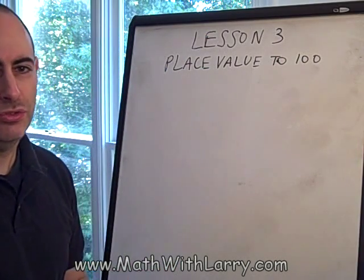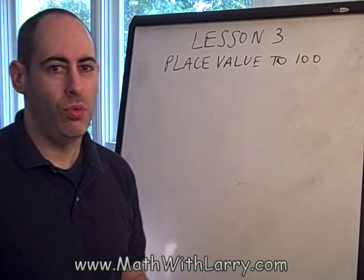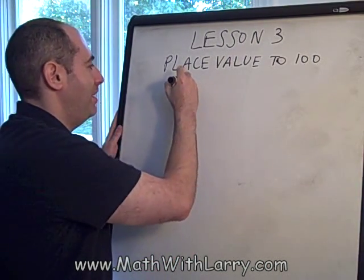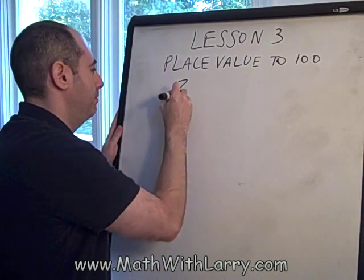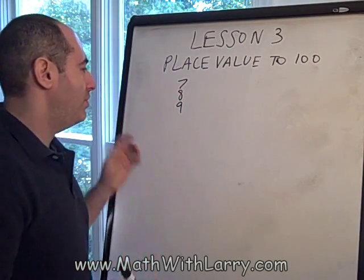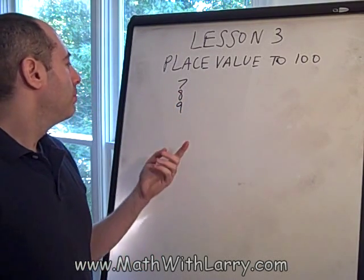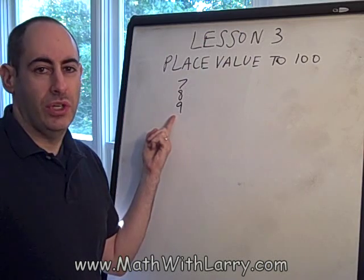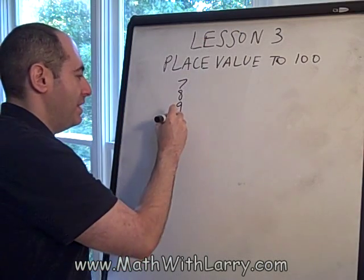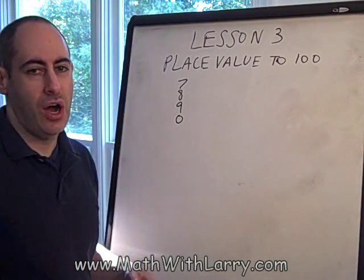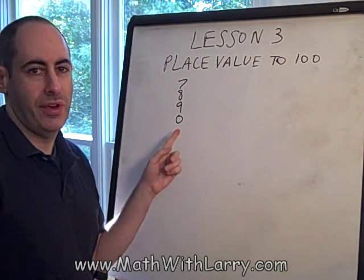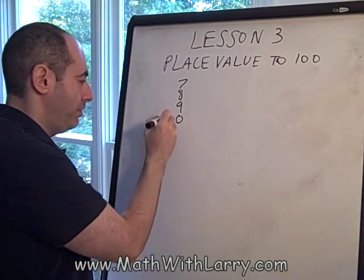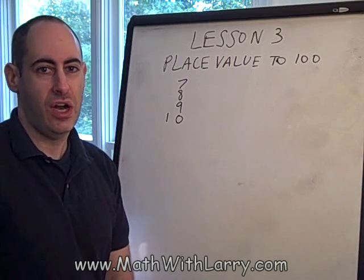Now, we know that when we count, we would of course start 1, 2, 3, and eventually we'll get to 7, 8, and 9. And when we get to 10, we're not allowed to squeeze 2 digits into 1 column. So what we do is write a 0 in what we call the 1's column, and we have to put our 1 to the left — we start a new column called the 10's column.